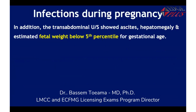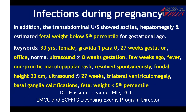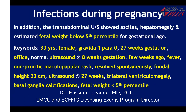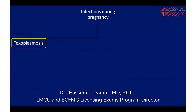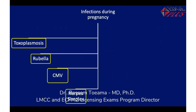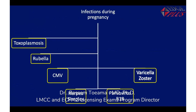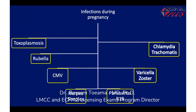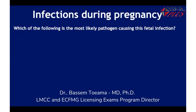The transabdominal ultrasound also showed ascites, hepatomegaly, and estimated fetal weight below the fifth percentile for gestational age. Those are the keywords summarized. Before heading to the question, think of the differentials: infections during pregnancy may include toxoplasmosis, rubella, cytomegalovirus, herpes simplex, parvovirus B19, varicella zoster, and Chlamydia trachomatis.